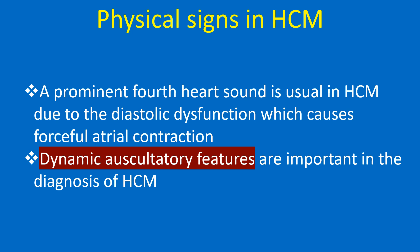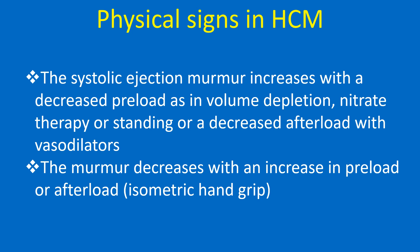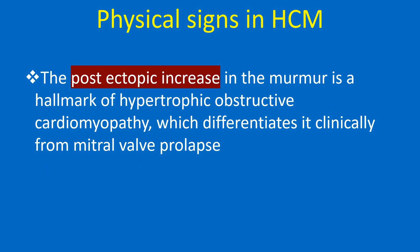Dynamic auscultatory features are important in the diagnosis of HCM. The systolic ejection murmur increases with decreased preload, as in volume depletion, nitrate therapy, or standing, or with decreased afterload with vasodilators. The murmur decreases with an increase in preload or afterload, such as isometric hand grip. The post-ectopic increase in murmur is a hallmark of hypertrophic obstructive cardiomyopathy, which differentiates it clinically from mitral valve prolapse.